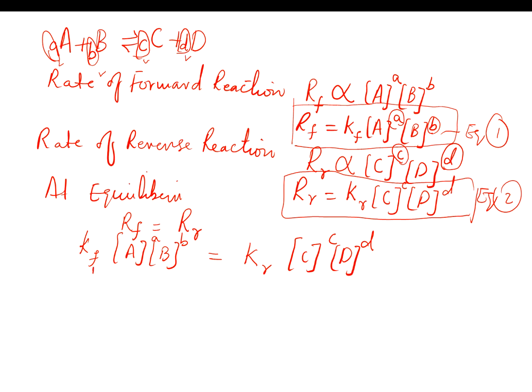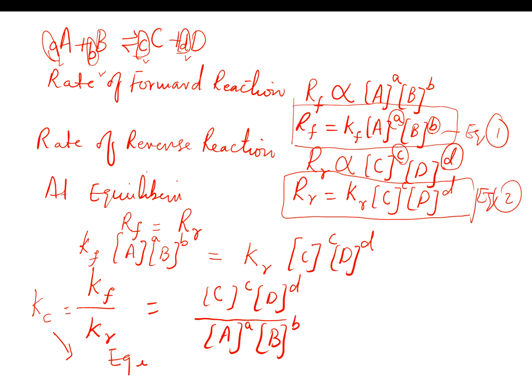By rearranging, on one side we have the proportionality constants. Kf over Kr will equal [C]^c[D]^d divided by [A]^a[B]^b. Now we introduce a shorthand: the proportionality constant for forward reaction divided by reverse reaction. This expression is Kc, called the equilibrium constant.